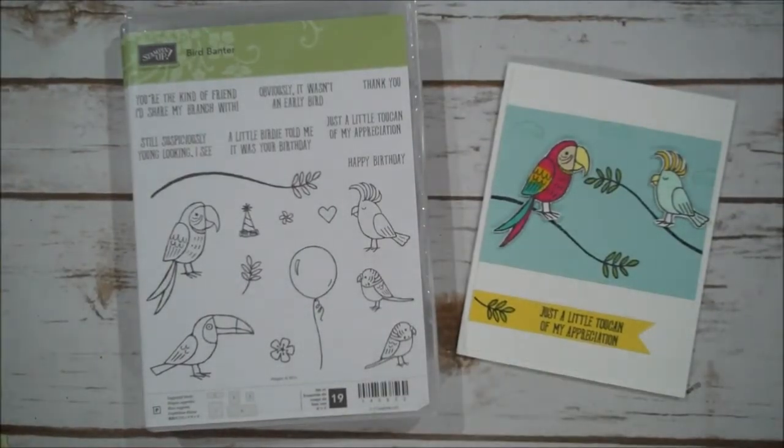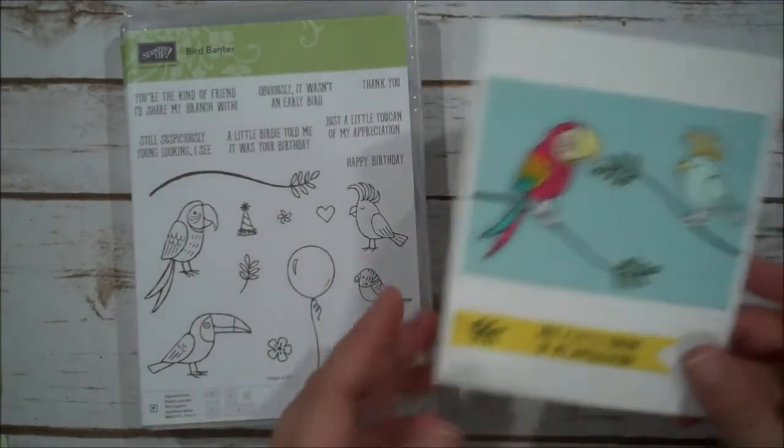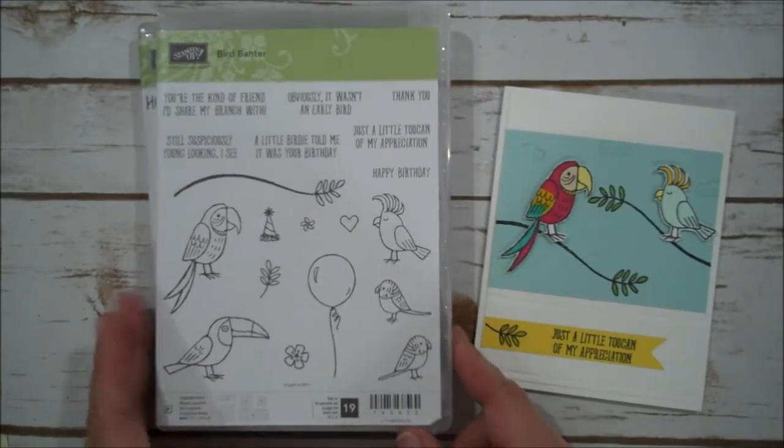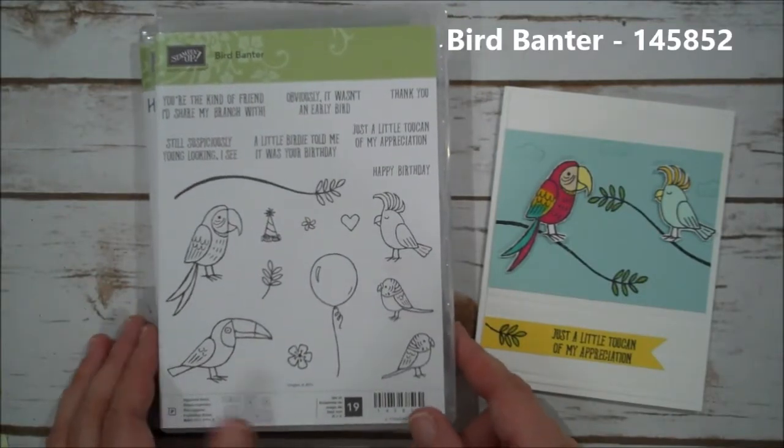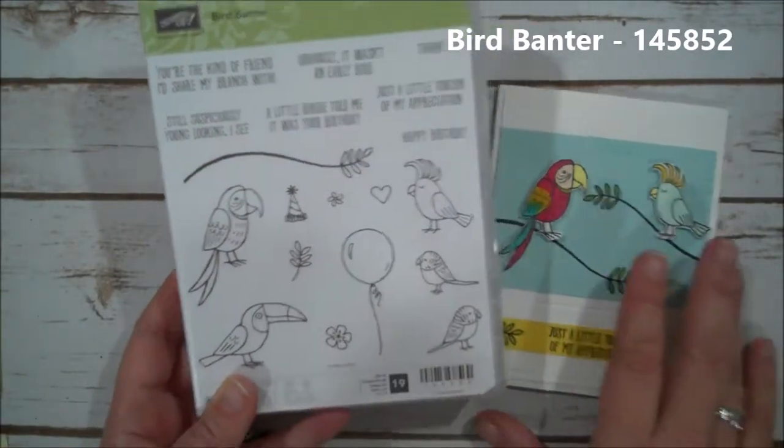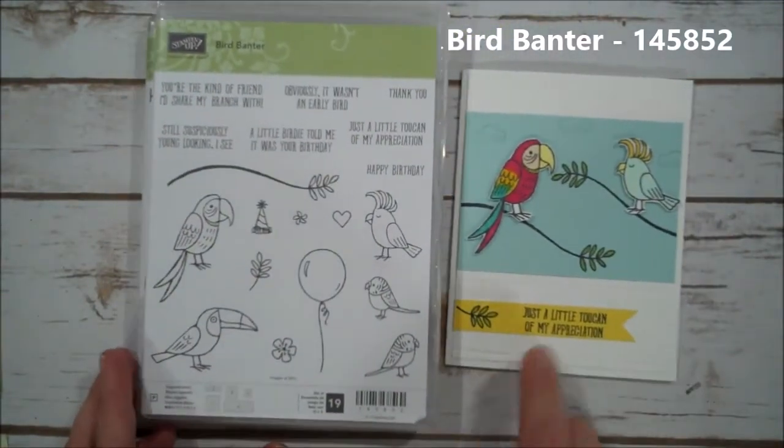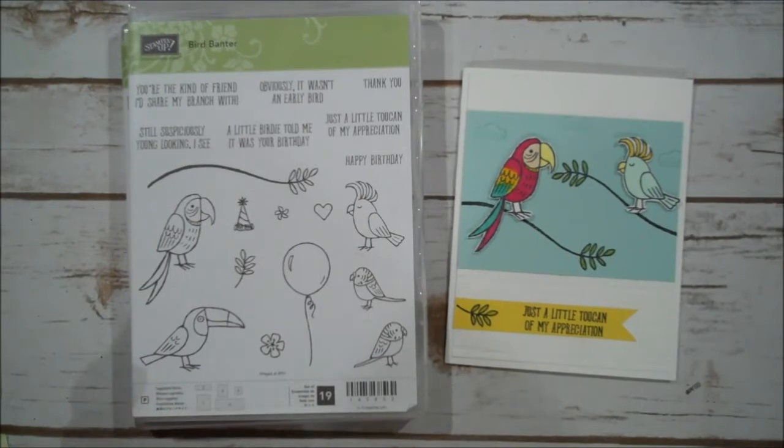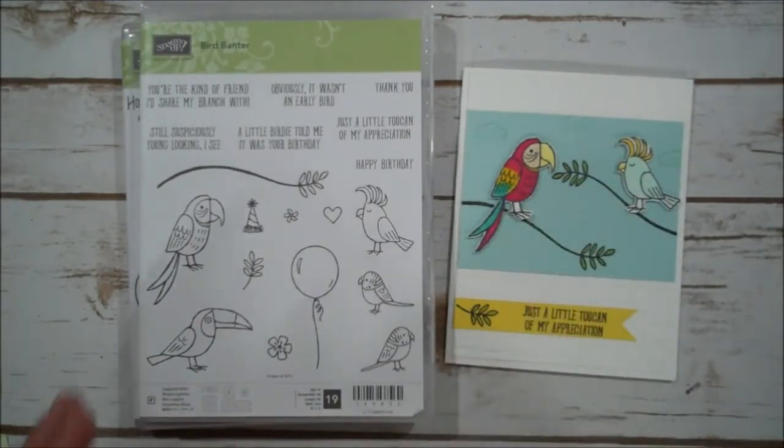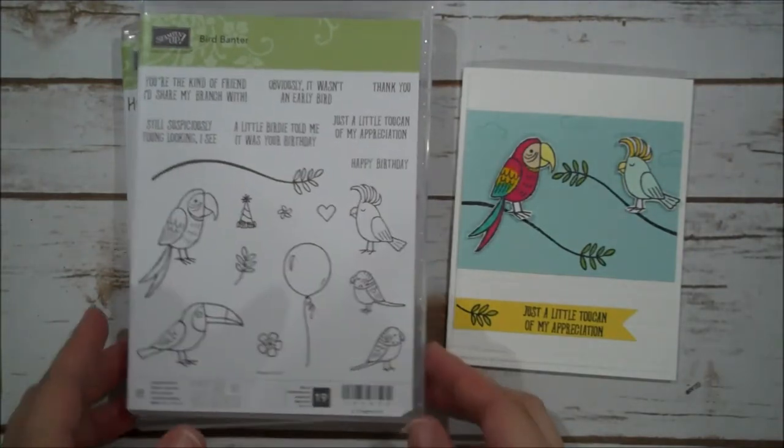Hello everyone, this is Shannon from theirishscrapper.com and today we are creating a cute little card using one of the new sets from the Occasions Catalog. This is called Bird Banter. It's a very fun set with some images and cute little sayings that go with it. So today we're going to be using just a little toucan of my appreciation. I'm using my Stampin' Blends to color the little birds and let's go ahead and get started.